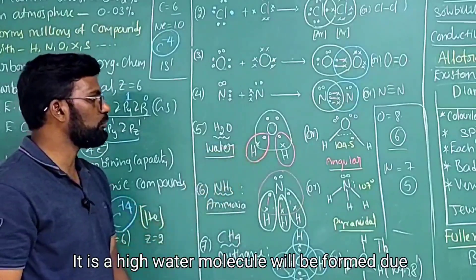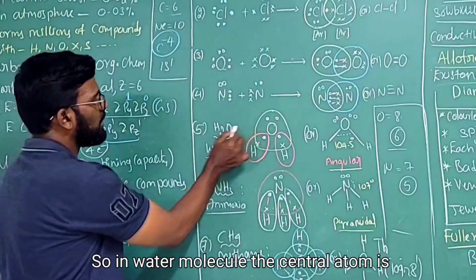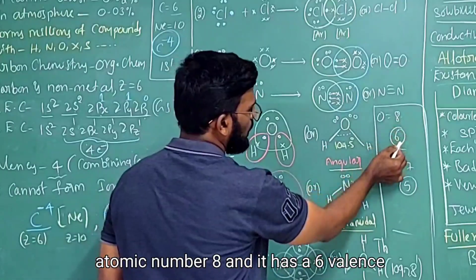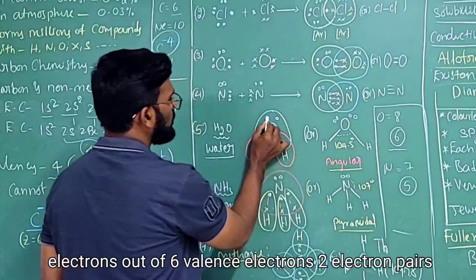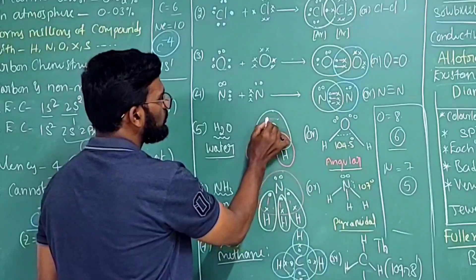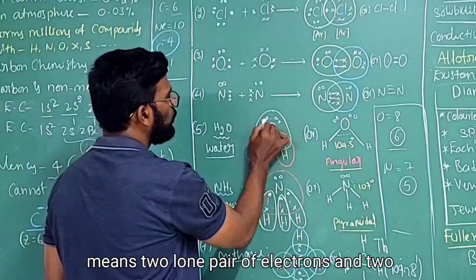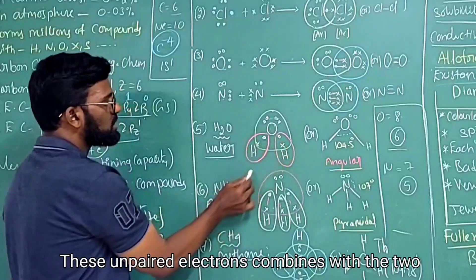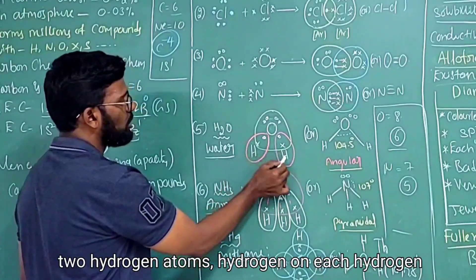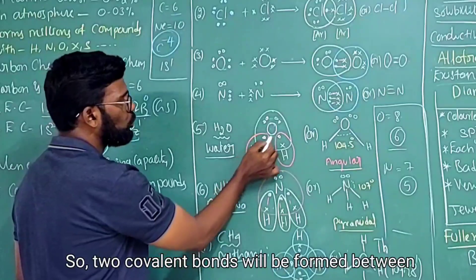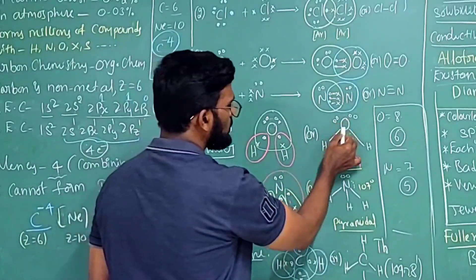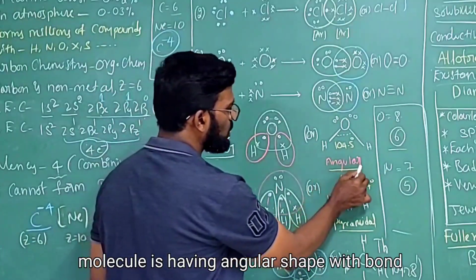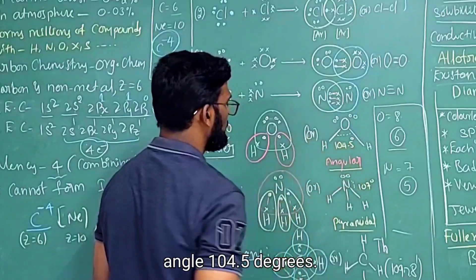Let's see how the water molecule is formed by covalent bonding. The central atom is oxygen, which has six valence electrons — two lone pairs and two unpaired electrons. These unpaired electrons combine with the unpaired electrons of two hydrogen atoms, forming two covalent bonds. The water molecule has an angular shape with a bond angle of 104.5 degrees.